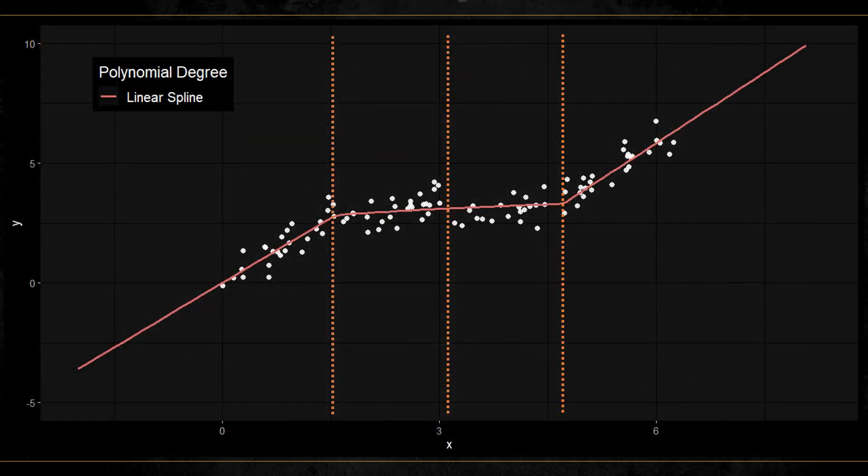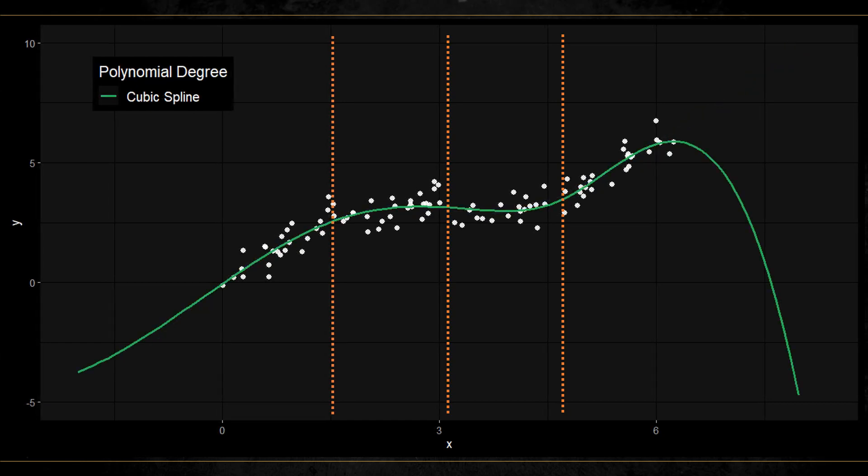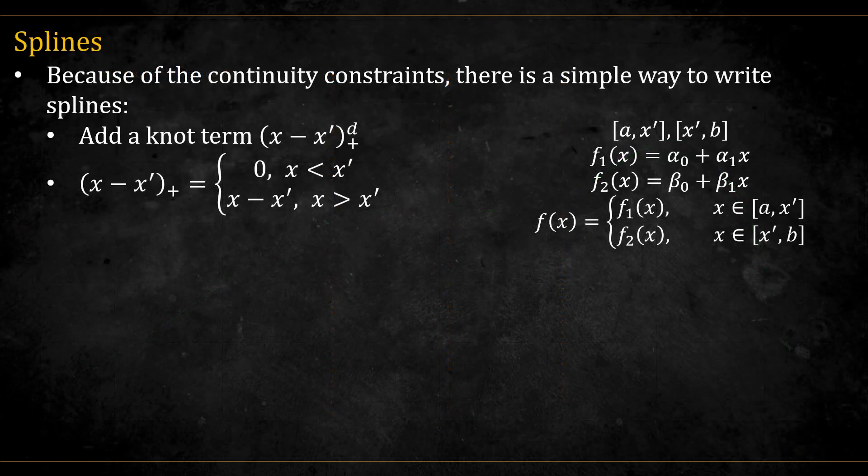Here is how a linear spline with three knots looks like. It has zero continuity, meaning the function is continuous but its derivatives are not. This is how a quadratic spline looks like. And this is how a cubic one looks like.